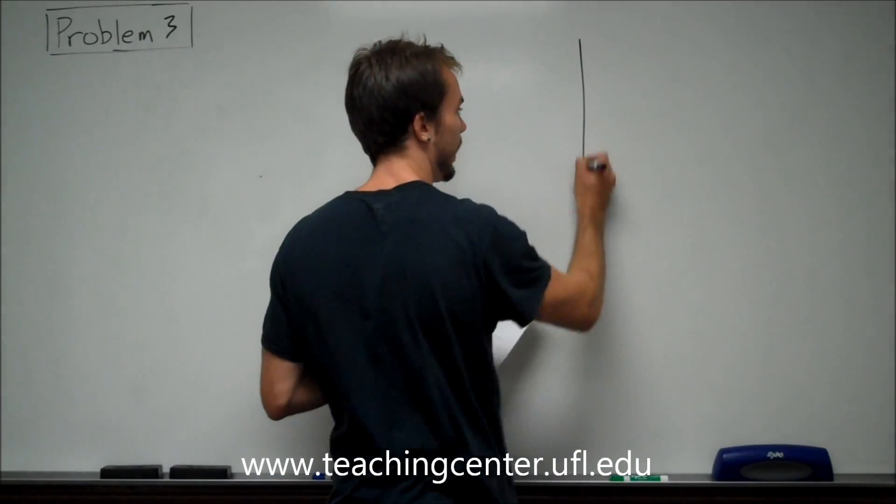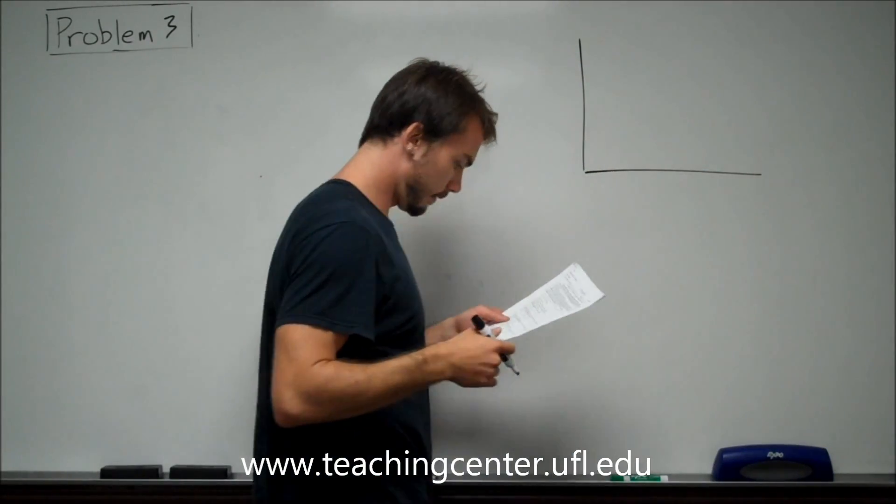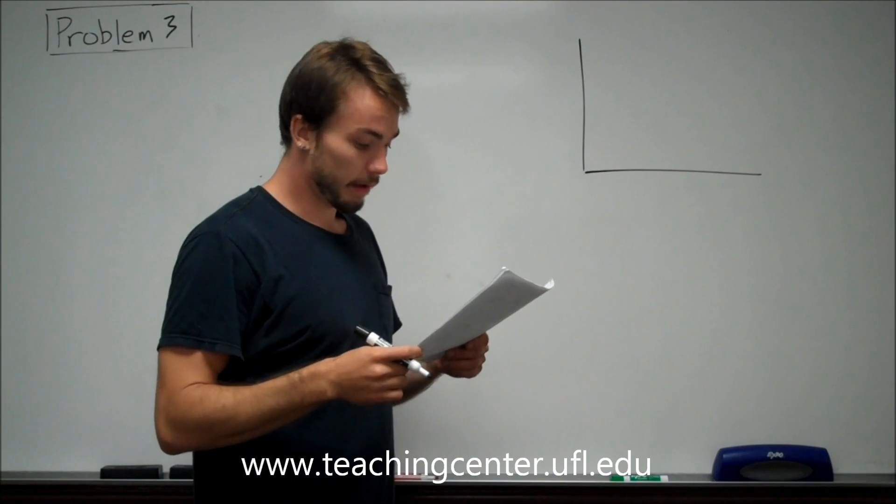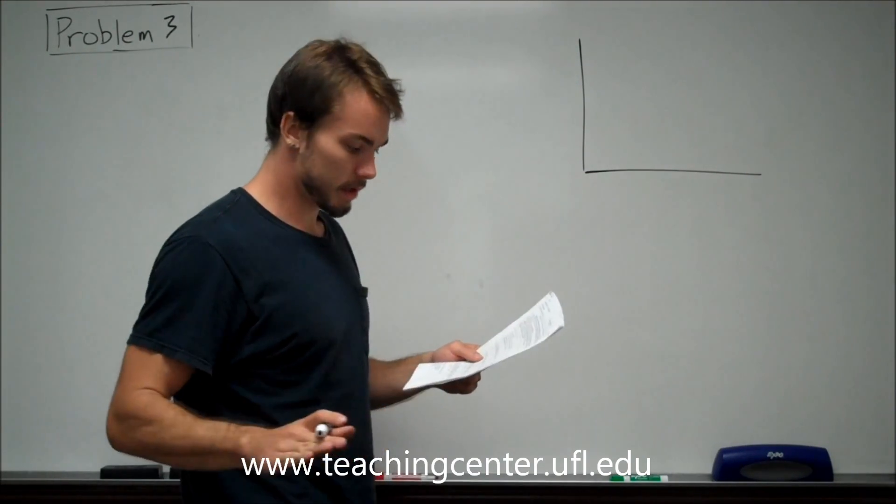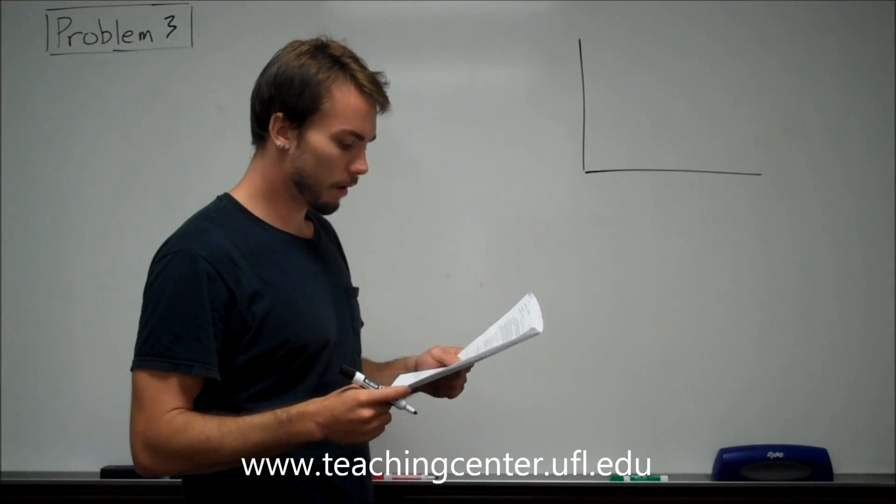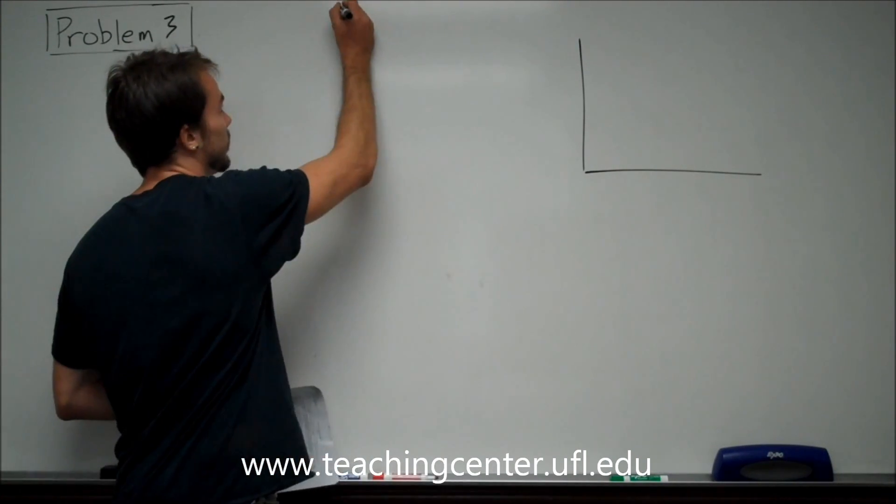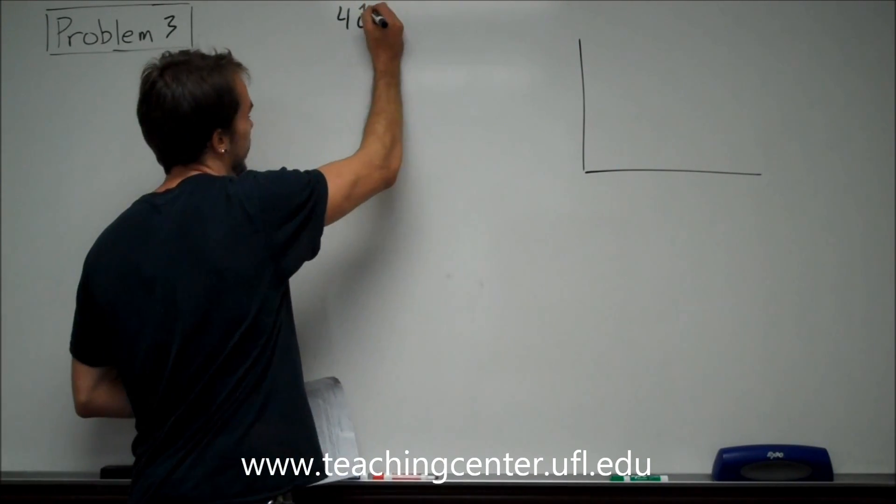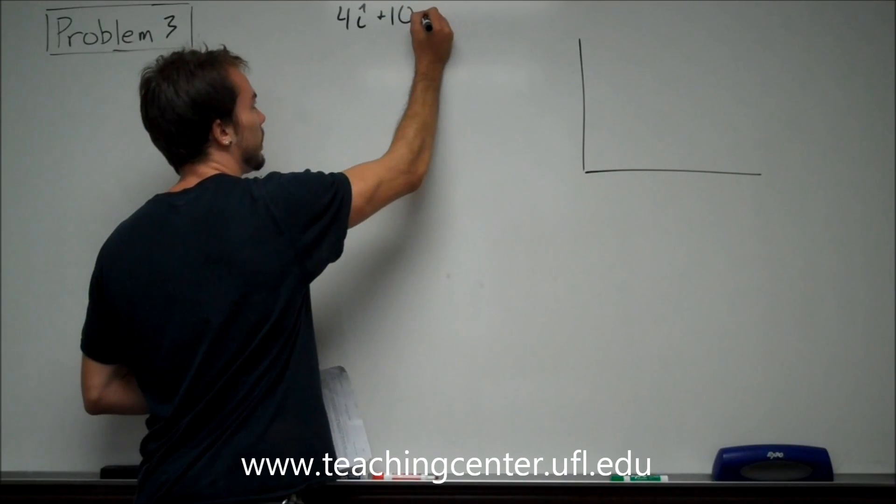So, on our axis, a vector in the XY plane, we're not worried about the Z dimension, just two dimensions. It has an X component of 4 and a Y component of 10. So just so we can see what we're looking at, that's going to be 4i plus 10j.